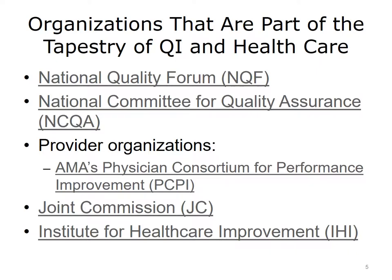The National Committee for Quality Assurance, NCQA, is a private 501c3 not-for-profit organization dedicated to improving health care quality. It develops quality standards and performance measures for a broad range of health care entities. These measures and standards are tools that organizations and individuals use to identify opportunities for improvement. The American Medical Association, AMA, convened the Physician Consortium for Performance Improvement, PCPI, as a national physician-led initiative dedicated to improving patient health and safety, mostly in the ambulatory care setting. PCPI's main charter is identifying and developing evidence-based clinical performance measures, promoting effective clinical performance improvement activities, and advancing the science of clinical performance measurement and improvement.